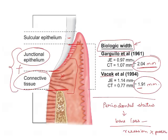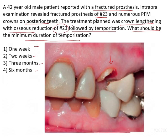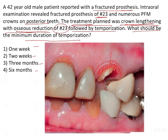Coming to the question — the reason for explaining all this is because the treatment plan here was crown lengthening, meaning some amount of gingival tissue is being removed, and with osseous reduction some amount of bone will also be removed around the tooth in order to maintain the biologic width. Now for the entire healing process to be complete, you need at least three to six months.